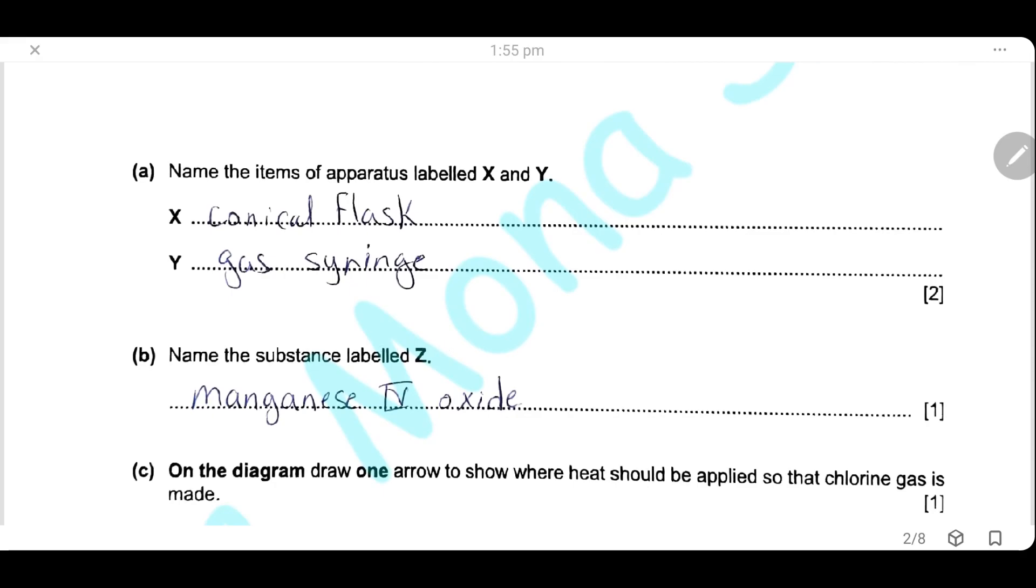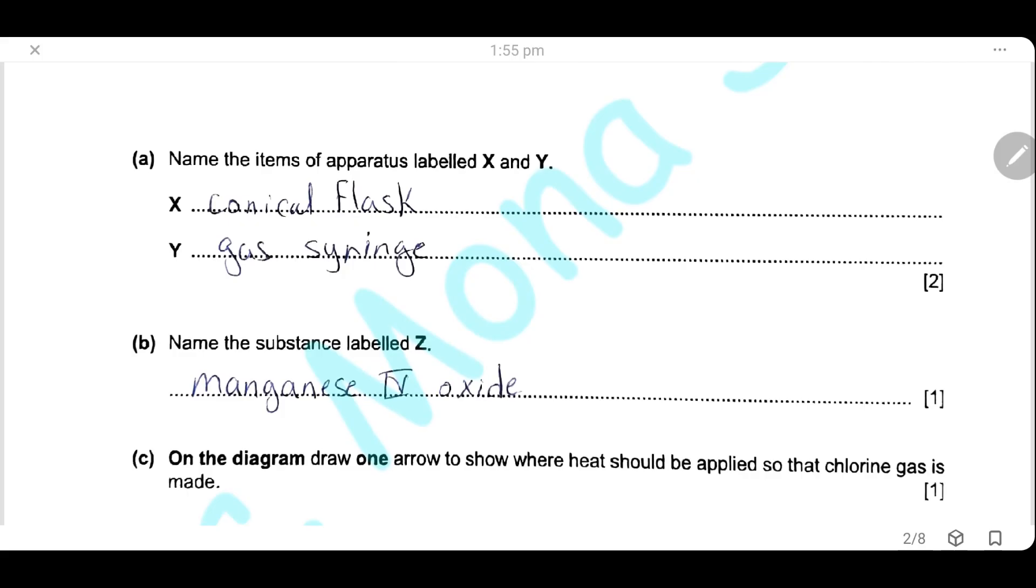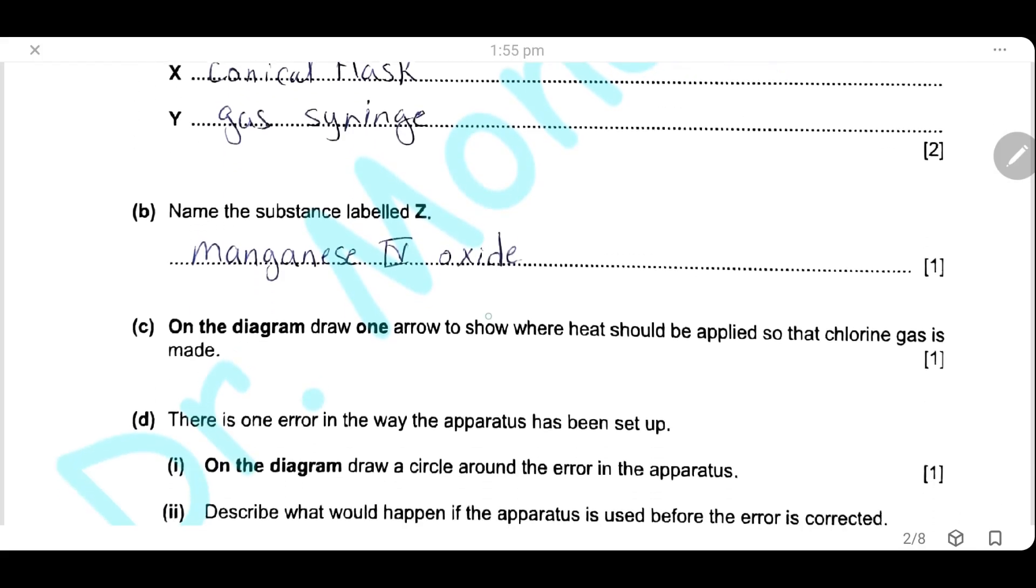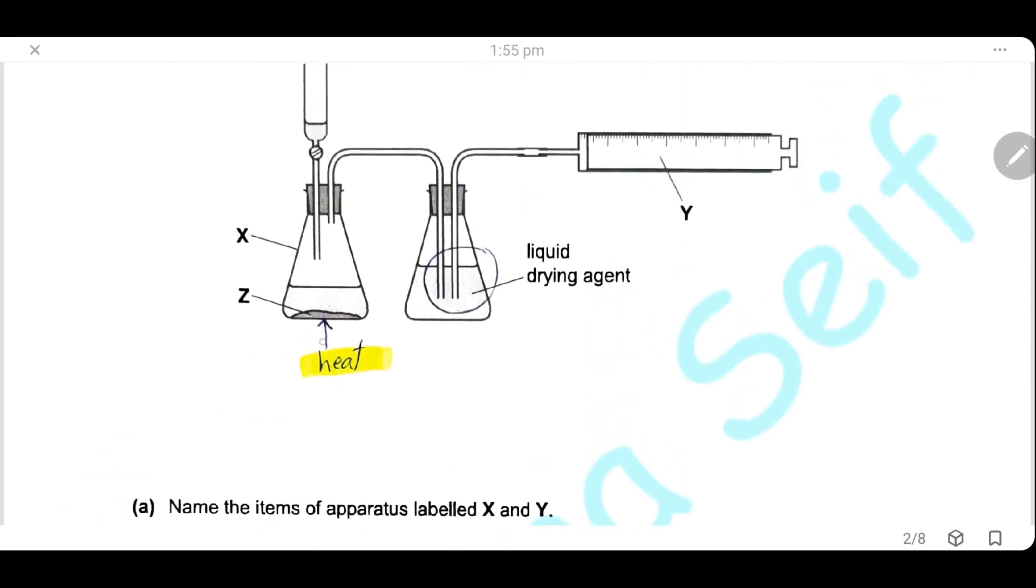Name the substance labeled Z. Z is solid manganese(IV) oxide. On the diagram, draw an arrow to show where heat should be applied so that the chlorine gas is made. Here, below the conical flask, we should draw an arrow to show the position of heat where we should heat the reactants.